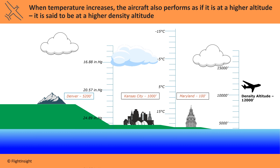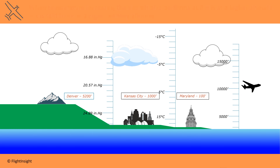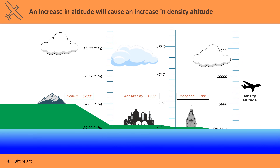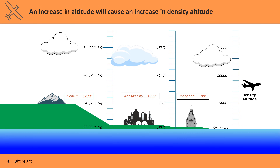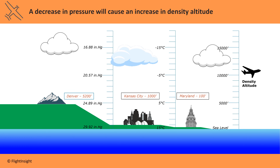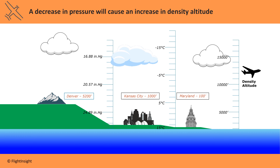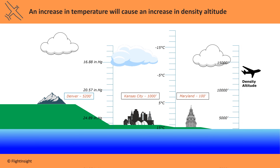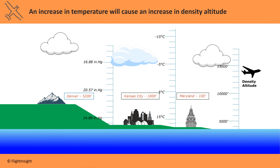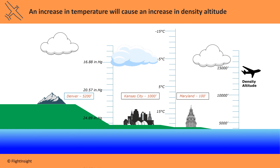It's a multi-step process to get to density altitude. To review: an increase in altitude causes an increase in density altitude, a decrease in pressure causes an increase in density altitude, and an increase in temperature causes an increase in density altitude.